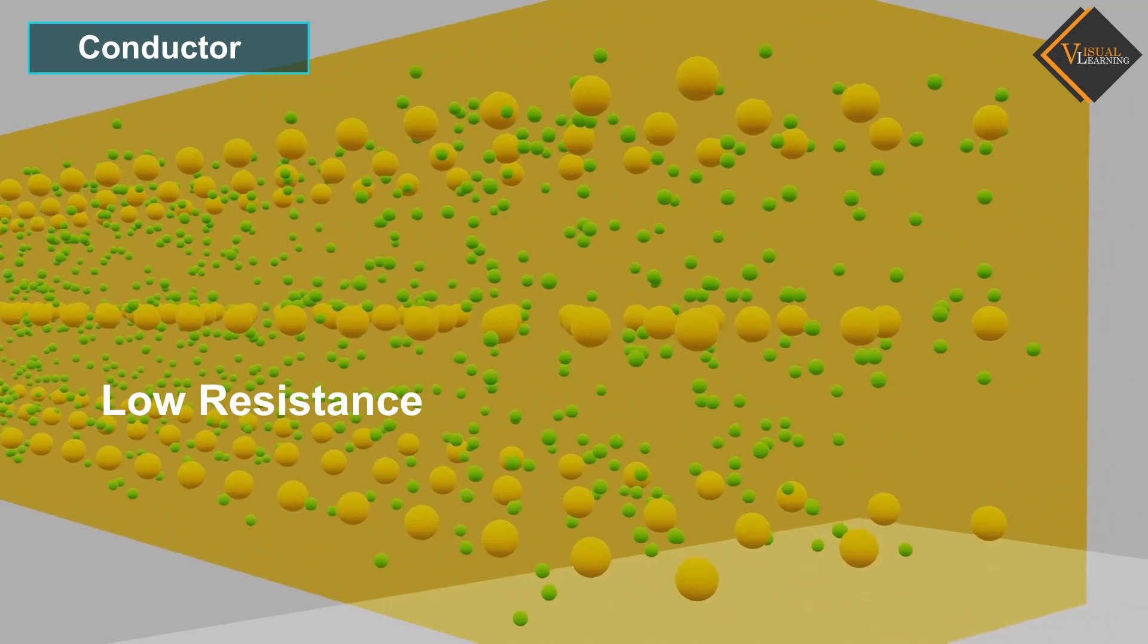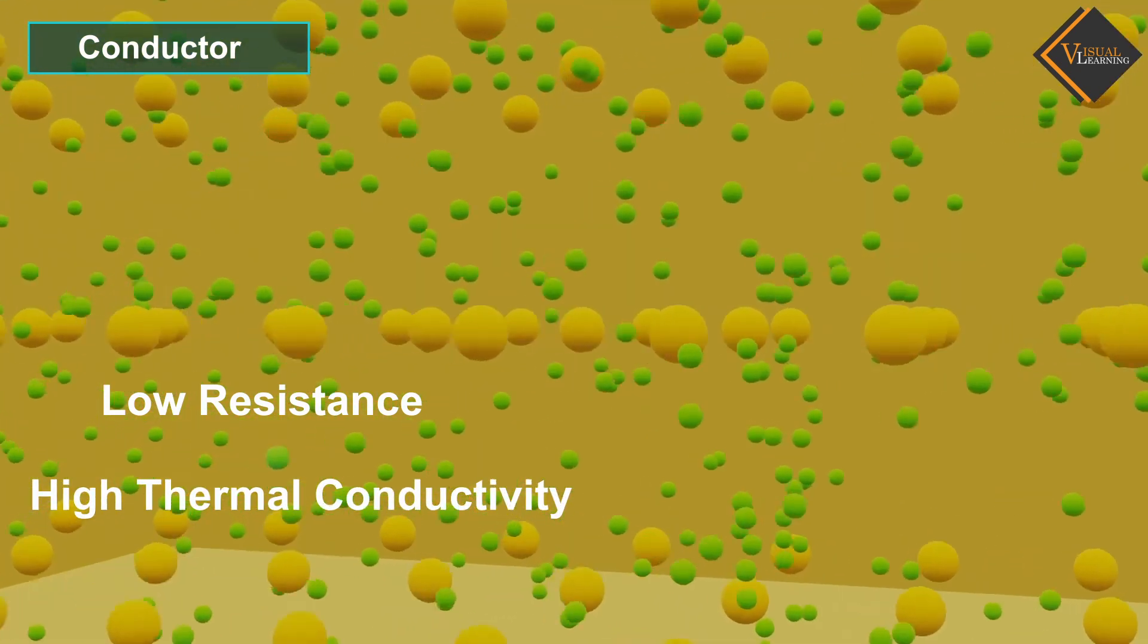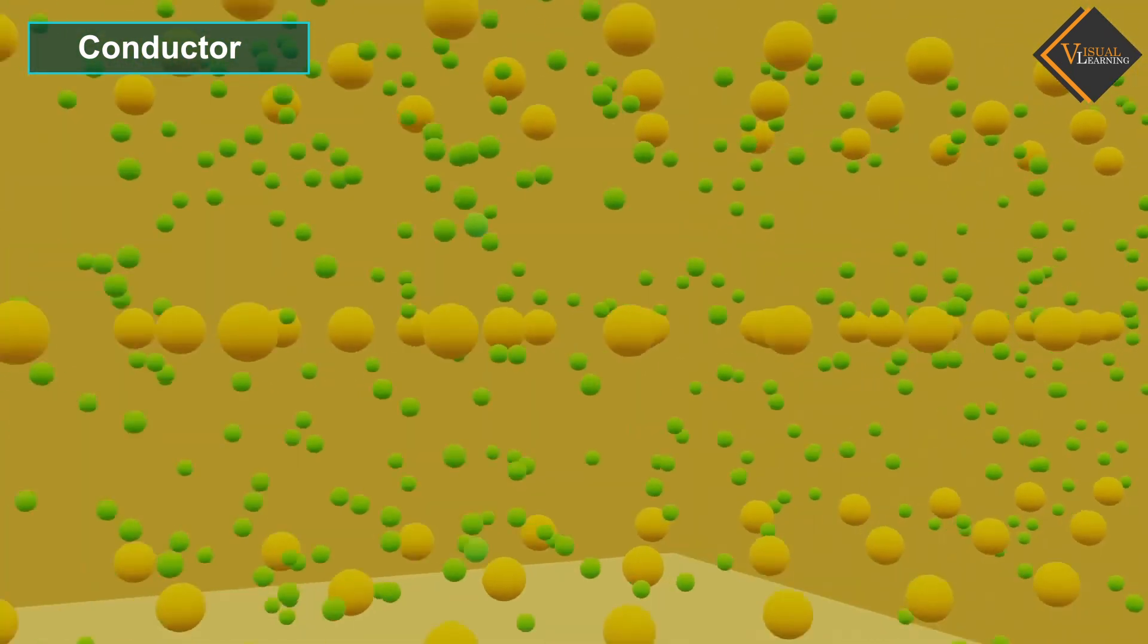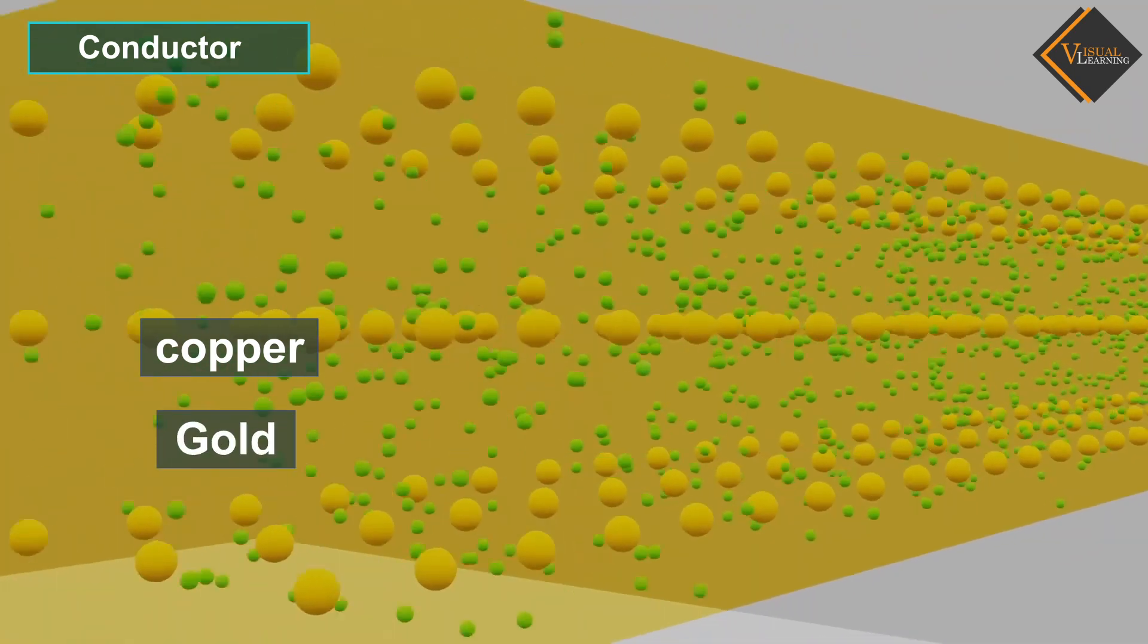Conductors have low resistance and high thermal conductivity. Conductors like copper, gold and steel.